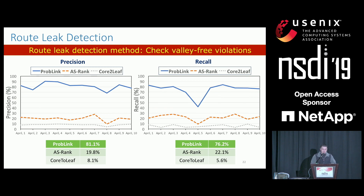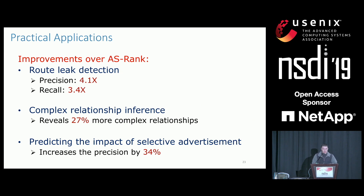We built a route leak detection system by detecting valley-free violations in BGP paths. We applied PropLink, ASRank, and call-to-leaf to such a route leak detection system for 10 consecutive days. PropLink achieves 81% precision and 76% recall on average, while ASRank and call-to-leaf have really bad performance. We also demonstrate the practical significance of our improvements by evaluating PropLink's impact on two other applications: inferring complex relationships and predicting the impact of selective advertisements. Due to time constraints, we only presented improvements on route leak detection — please refer to the paper for more details.